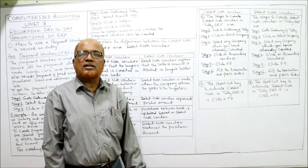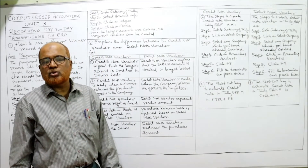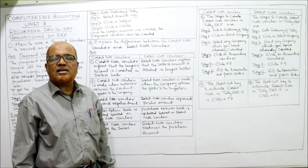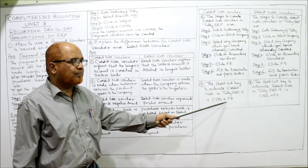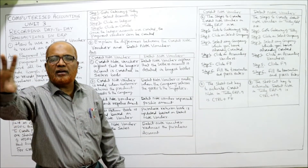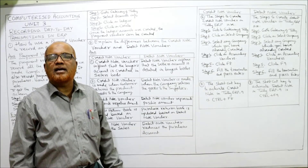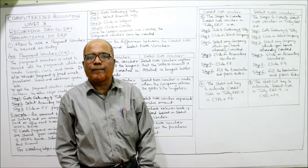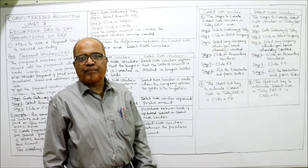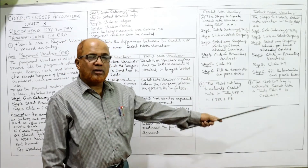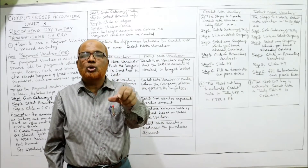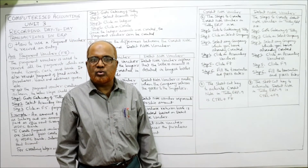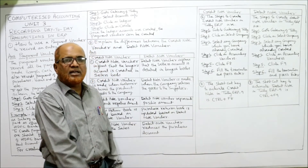There are also shortcut keys: instead of following all the steps, simply press Ctrl+F8 to immediately open the credit note voucher screen. For the debit note voucher, the shortcut key is Ctrl+F9. So Ctrl+F8 is credit note voucher and Ctrl+F9 is debit note voucher.